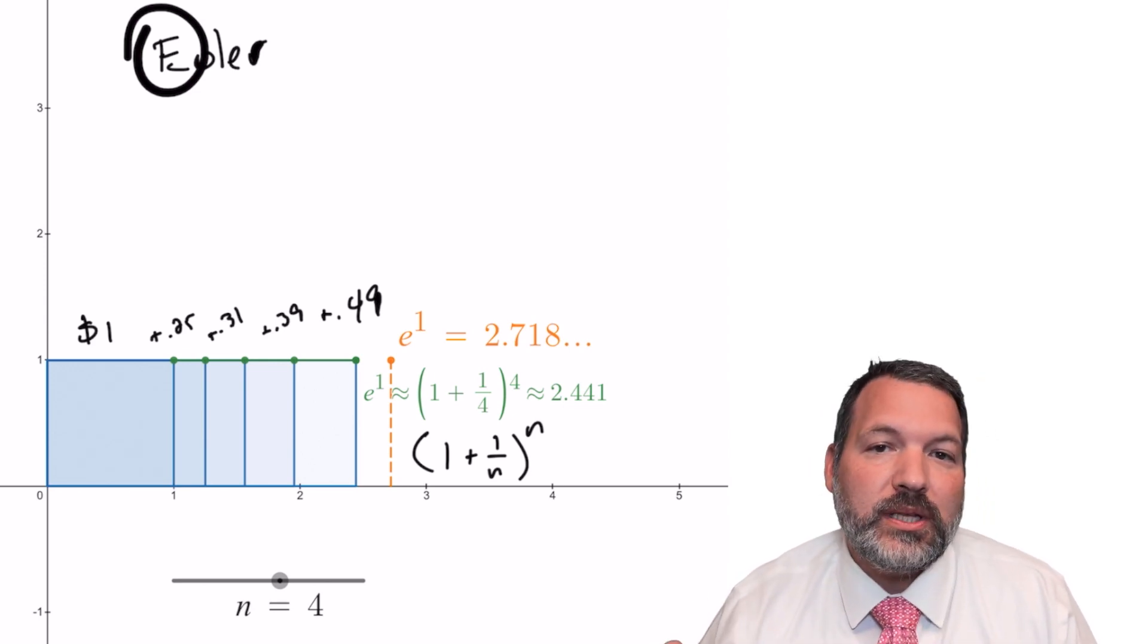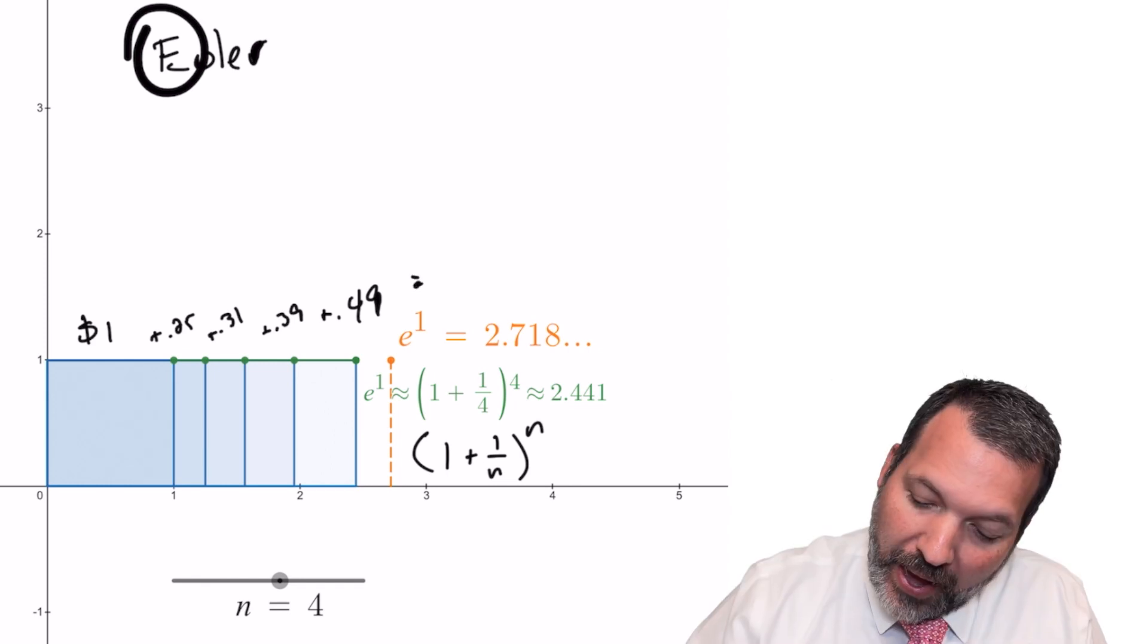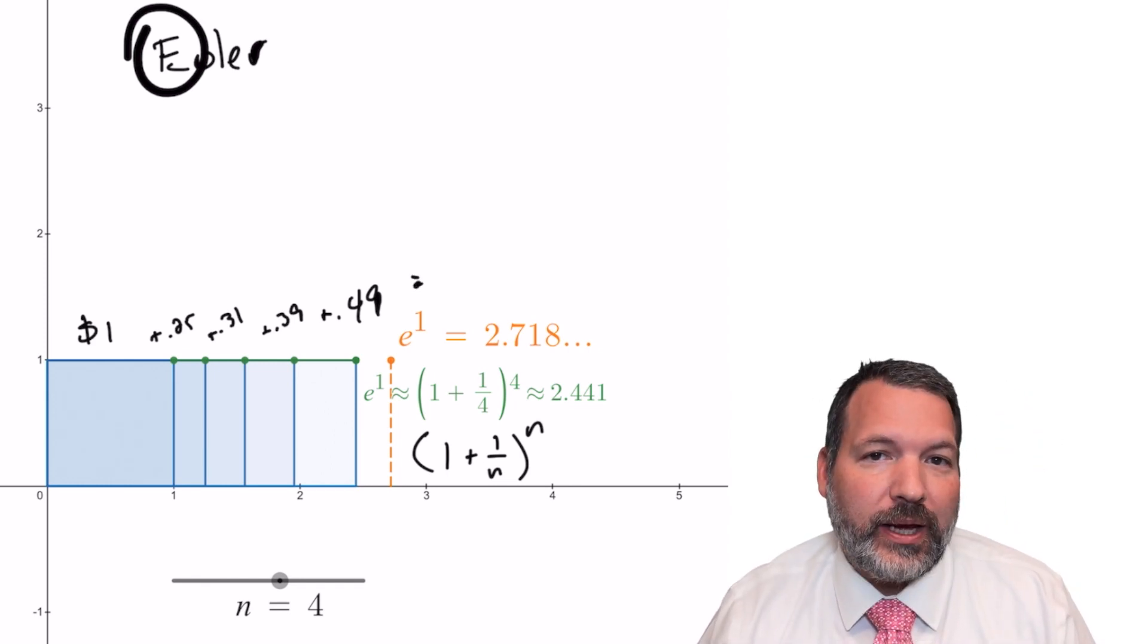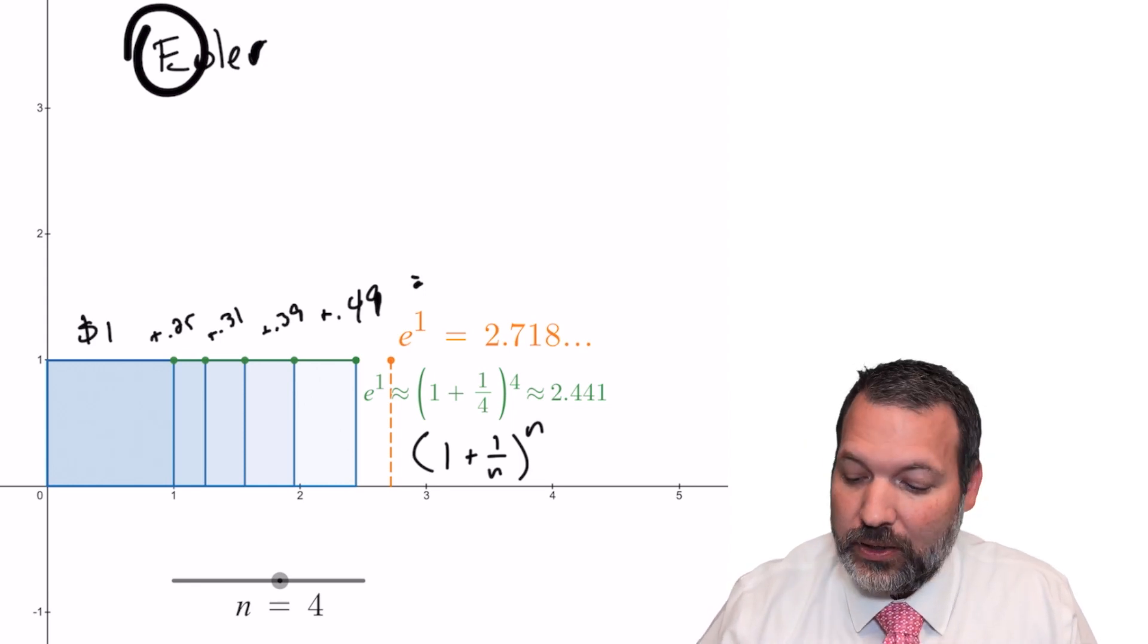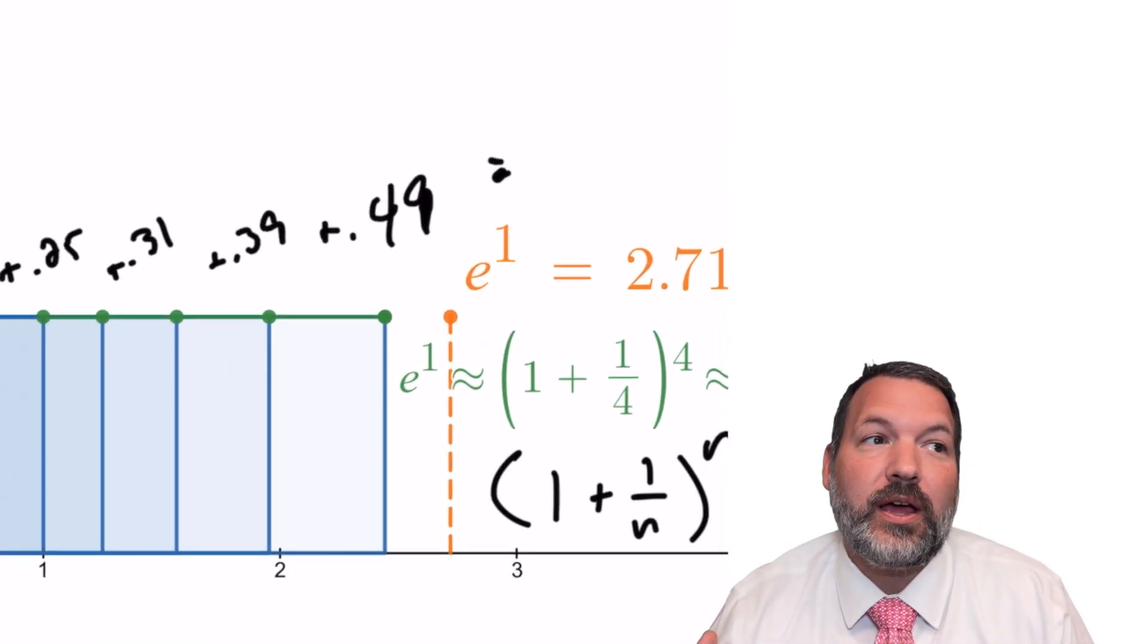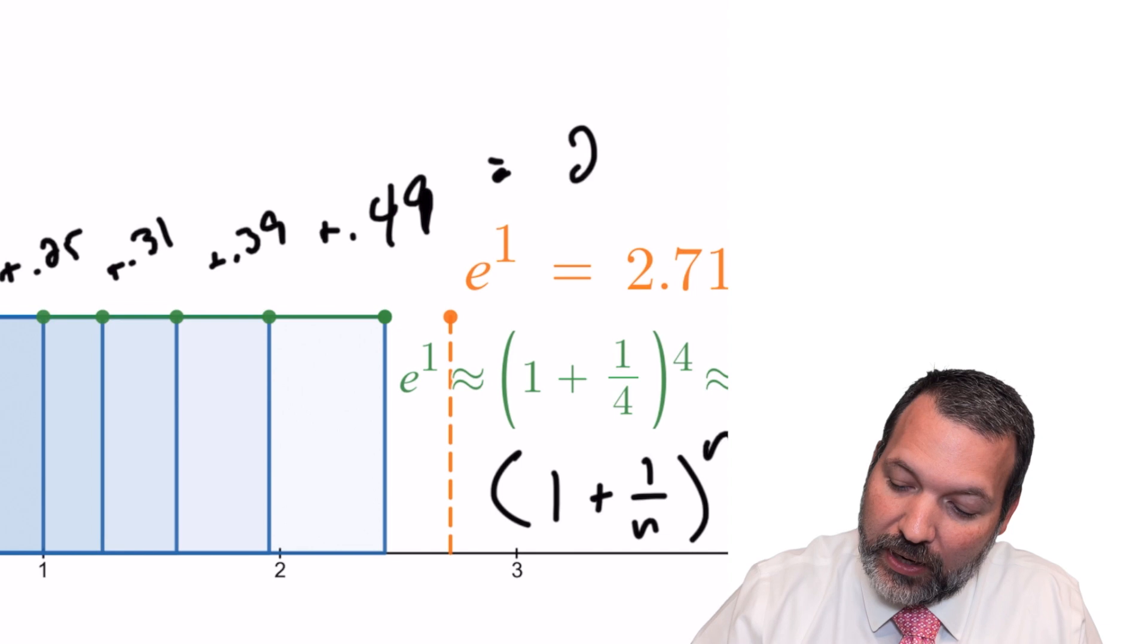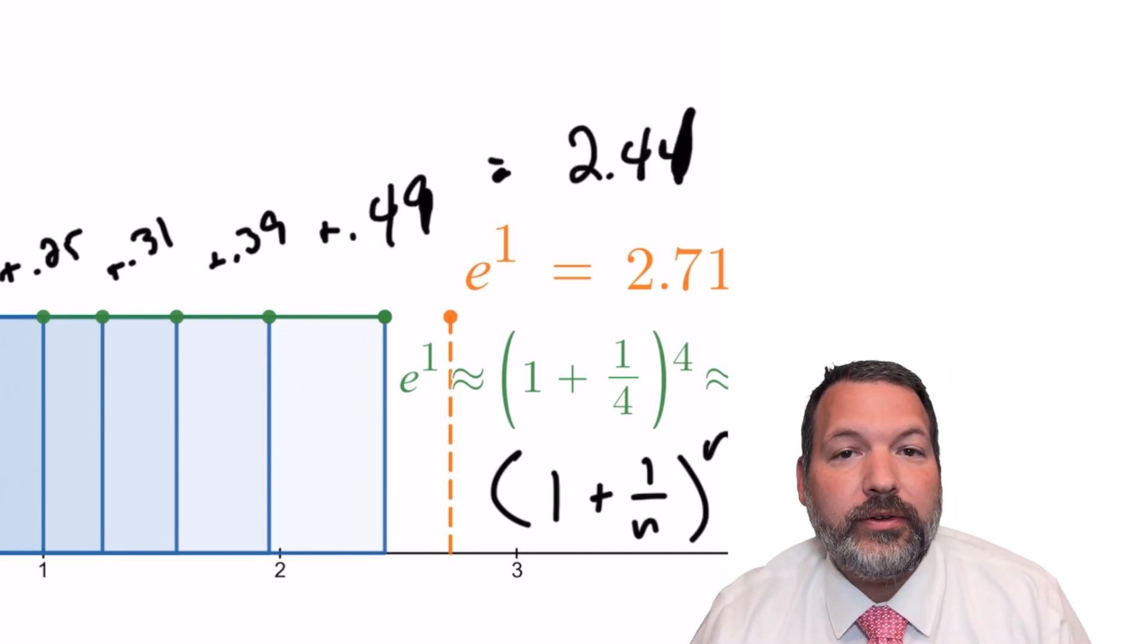So for example, when you increase the number of slices to four, you add 25 cents for that first check-in, put that money back in, you get 31 cents for the next check-in, 39 cents for the check-in after that, 49 cents for the check-in after that. And after a year, you have $2.44.